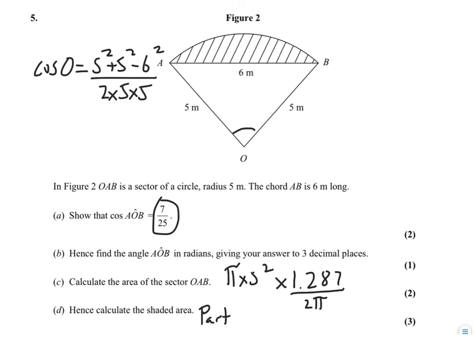Hence calculate the shaded area. You've got your answer from part C, so this is part C, take away a half times 5 times 5 times sine of 1.287. So again, fairly straightforward. You've got the whole thing, take away the triangle, which you can find using that formula there.